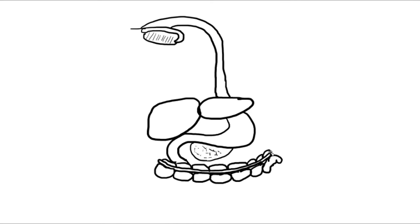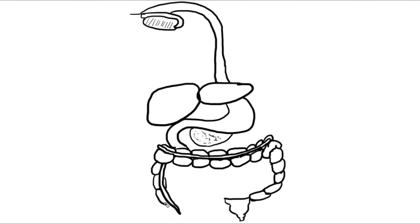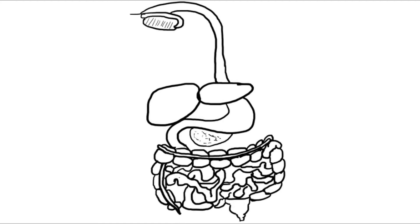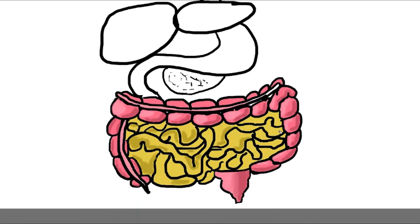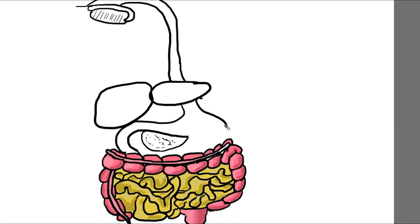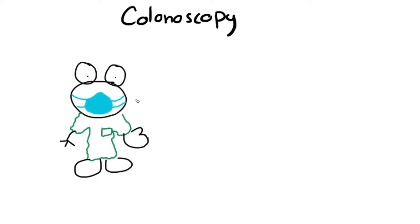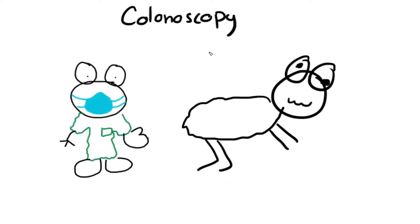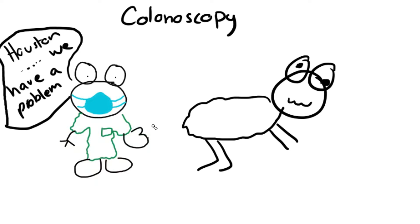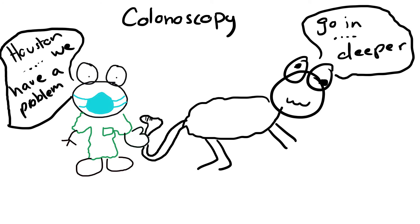Streptococcus bovis is normally part of our normal flora in the GI tract. However, if a patient has bacteremia and we see Strep bovis growing in blood cultures, we need to perform a colonoscopy because Strep bovis has a very high association with colorectal cancer — you want to rule out polyps or adenomas.